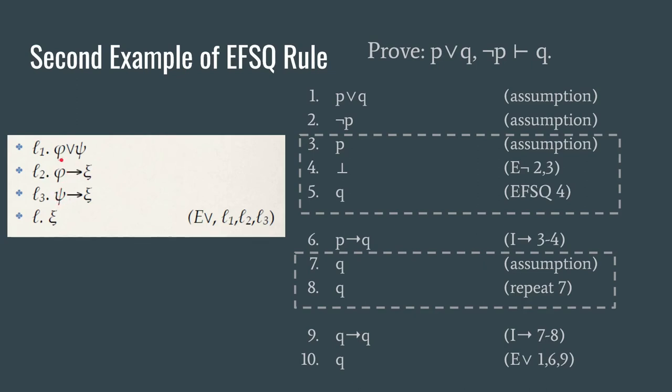So here we have φ∨ψ. So in order to eliminate the disjunction we need one arrow statement with φ in the antecedent and we need one arrow statement with ψ in the antecedent, and then we need the same formula to be in the consequent of both of those arrow statements. So essentially what we need is an arrow statement P→Q and another arrow statement Q→Q.